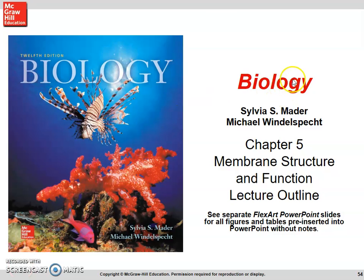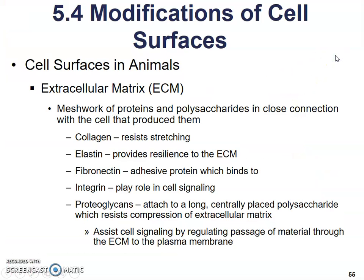Let's wrap up the chapter section on modifications of cell surfaces in animals. There's the extracellular matrix — the area outside of the cell. It is a meshwork of proteins and polysaccharides, which are sugars — lots and lots of sugars bonded together — so a meshwork of proteins and sugars in close connection with the cell that produces them.